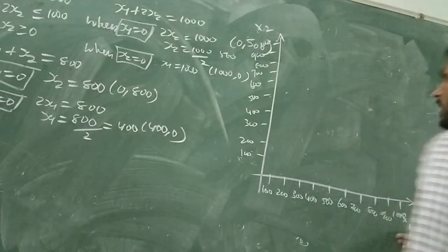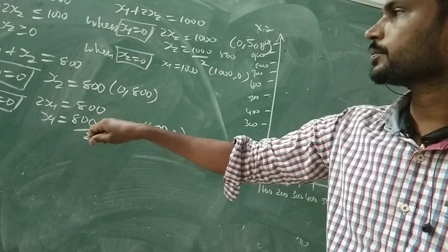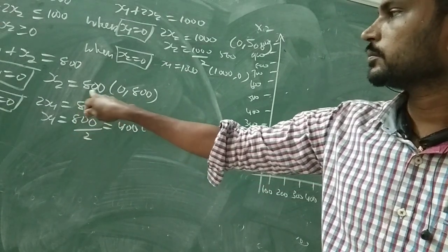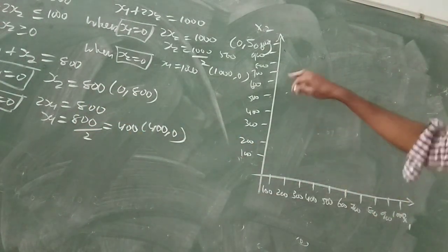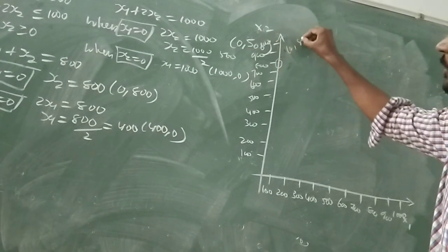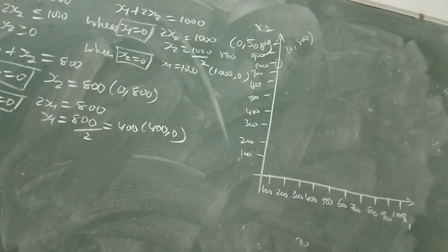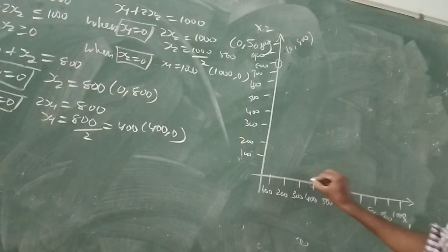So x1 axis, x2 axis. The first corner point of the first line is (0, 800): x1 is 0, x2 is 800. And another corner point is (400, 0).